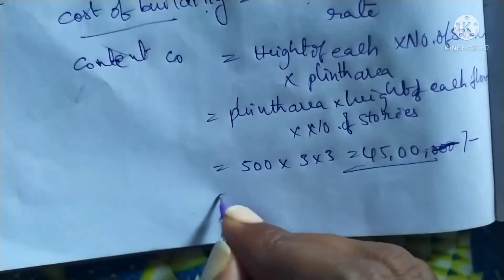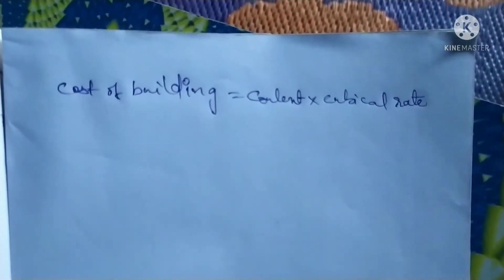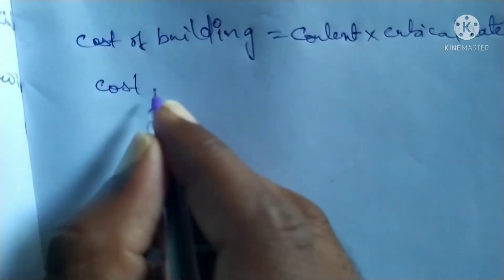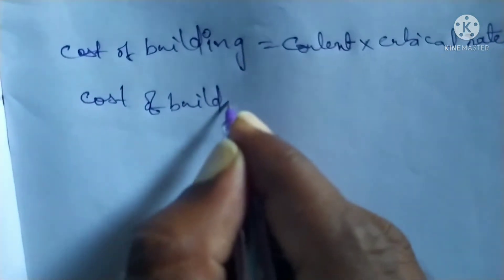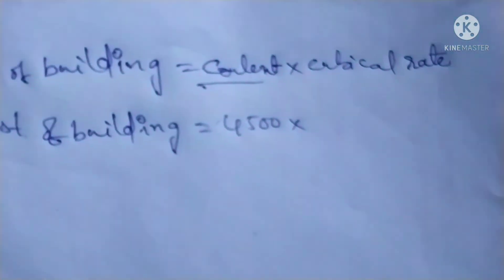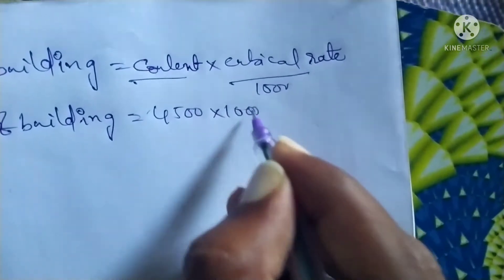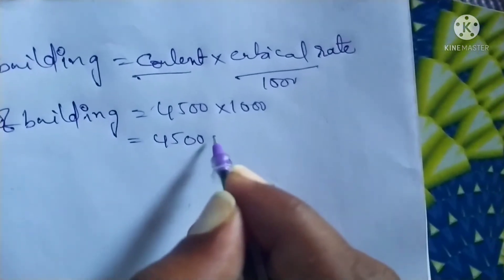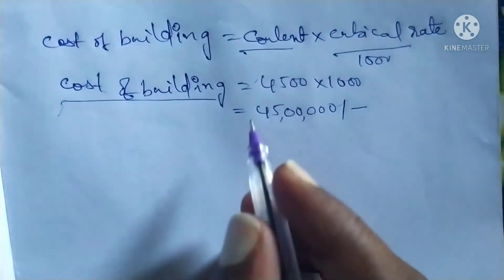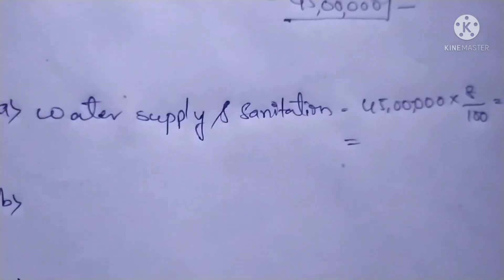Cost of building equals cubic content into cubic content rate. Cost of building equals 4400 into 1000 rupees per cubic meter — we got 45 lakhs. The cost of the building is 45 lakhs rupees.